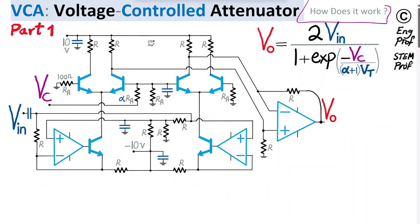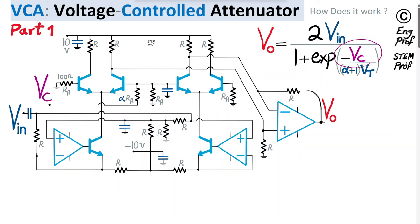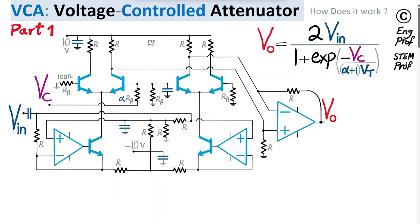We want to see how this VCA circuit works and prove that the output voltage is related to the input voltage in the form: V_out = 2 * V_in / (1 + exp(−V_control / (alpha + 1) * V_T)), where V_T is the thermal voltage, and V_control is a negative control voltage applied to the circuit to control the gain or attenuation.